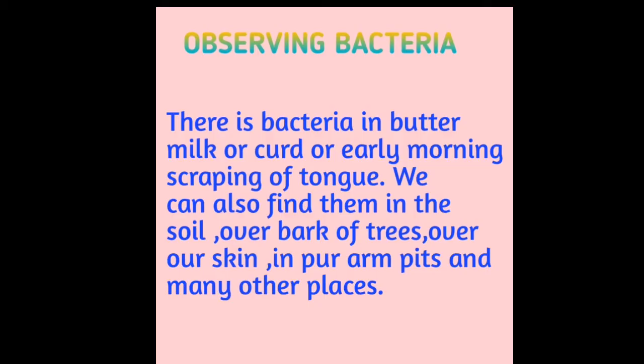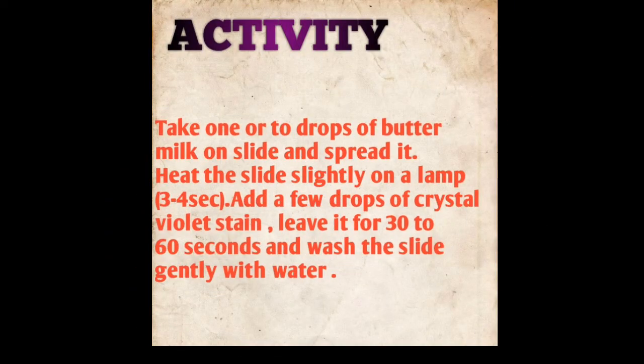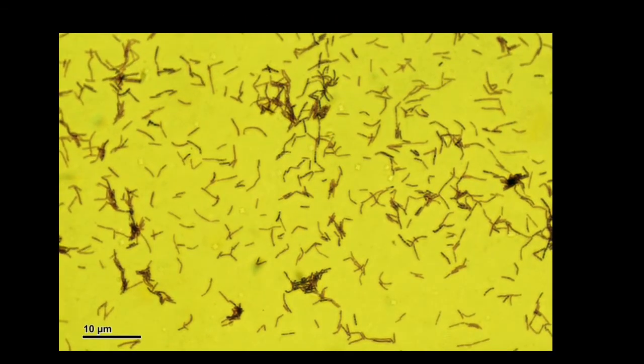Now let us look at them more closely by doing an activity. Take one or two drops of buttermilk on a slide and spread it evenly. Heat the slide slightly on a lamp for three to four seconds. Add a few drops of crystal violet stain, leave it for thirty to sixty seconds, and wash the slide gently with water. Observe the slide under the compound microscope. You will observe some stained microorganisms which are nothing but Lactobacillus bacteria.